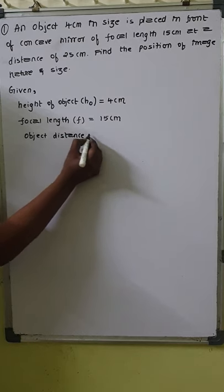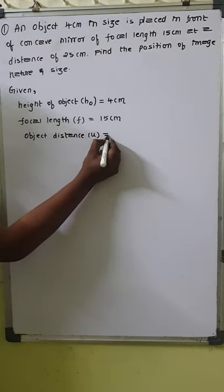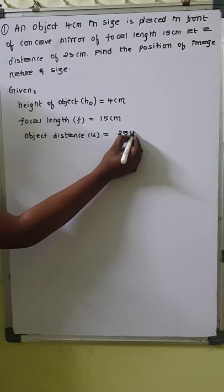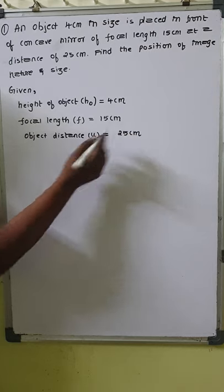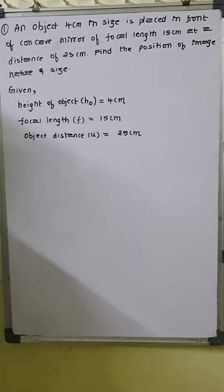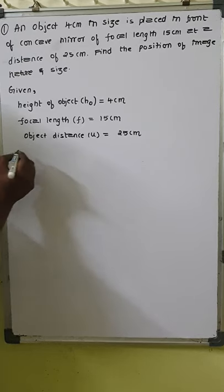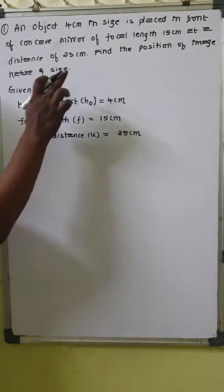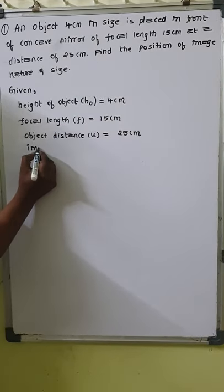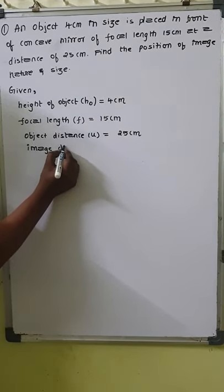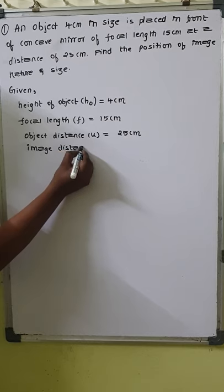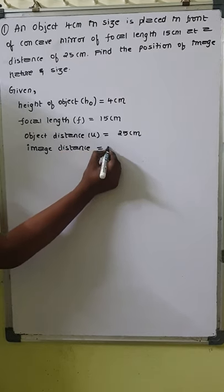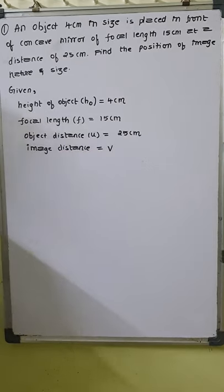Object distance u equals 25 centimeter. We have to find the position of image, nature, and size. Finding the position of image means finding the image distance. Image distance we don't know, so let us call it v.